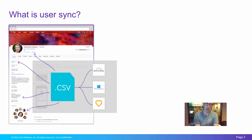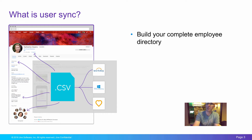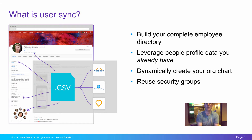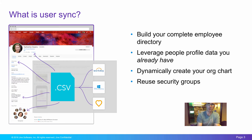So what's this UserSync business about? Simple. It's a way to build your complete employee directory, leverage people profile data that you already have in those systems, dynamically create your org chart, and reuse security groups that you've defined in other systems for use in Jive's security permissioning model.